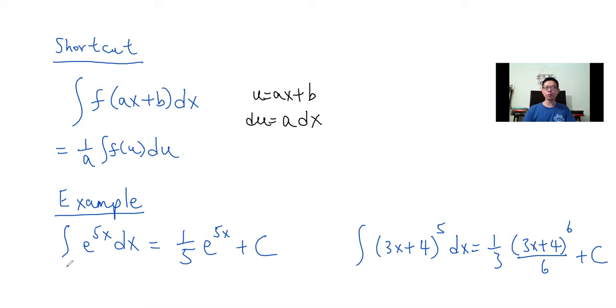For example, if you have the integral of e^(5x) dx, if we let u be 5x, the a here will be 5. So we have 1 over 5 and then the integral of e^u, which is just e^u. So it's 1 over 5 times e^(5x) plus C.